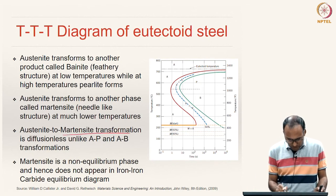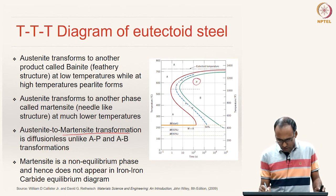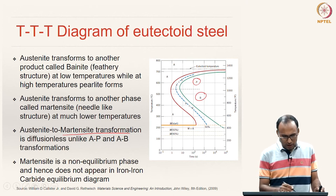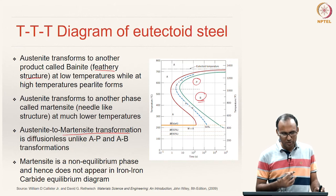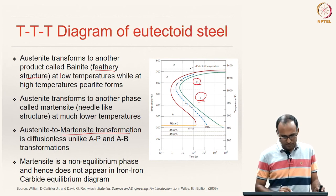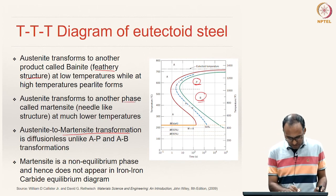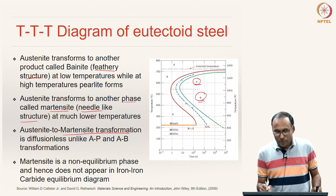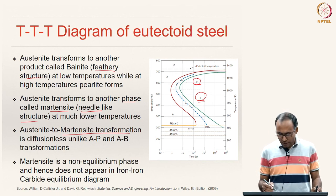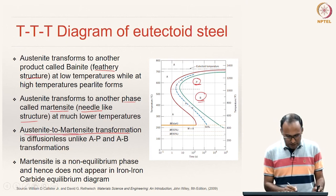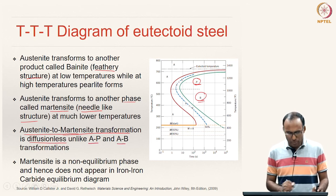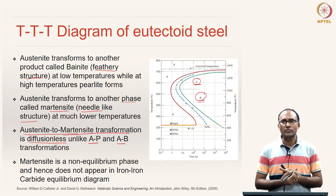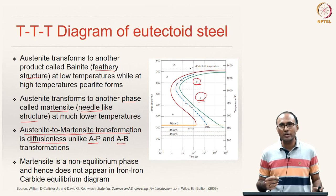The austenite-to-martensite transformation is different from austenite-to-pearlite or austenite-to-bainite. The bainite microstructure is a feathery microstructure — under the microscope it shows a feather-like structure at low temperatures, while pearlite forms at high temperatures. Martensite is a needle-like microstructure at much lower temperatures. The austenite-to-martensite transformation is a diffusionless transformation, unlike austenite-to-pearlite and austenite-to-bainite which both require diffusion.